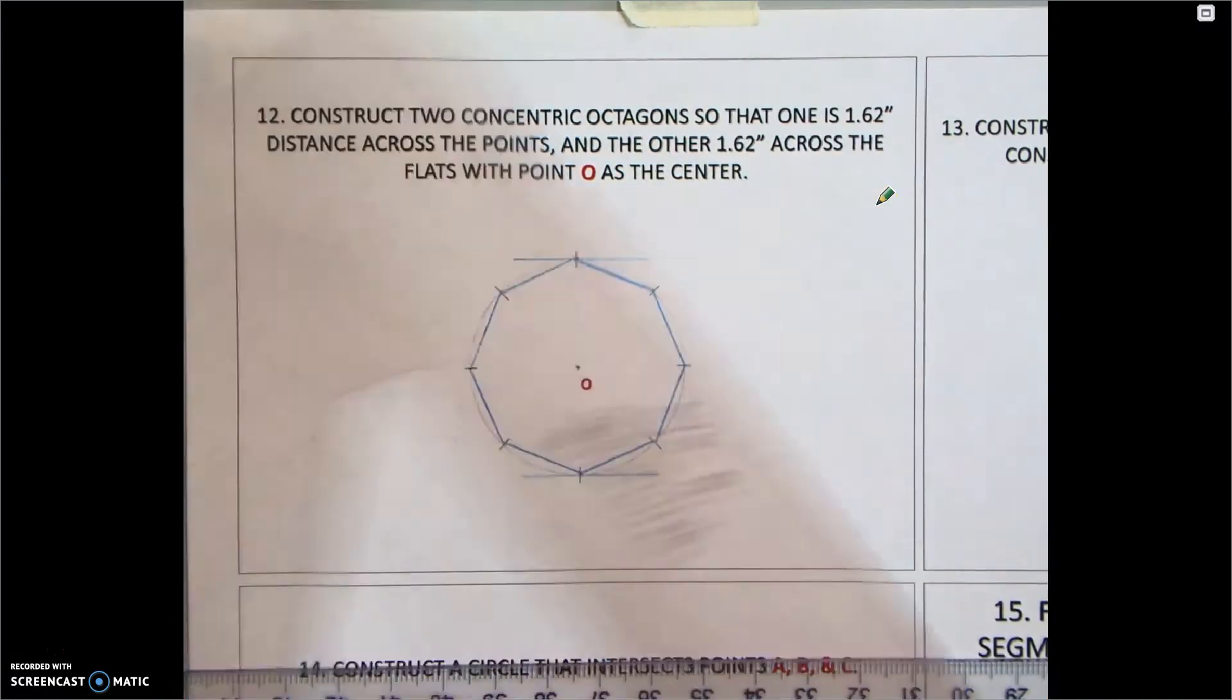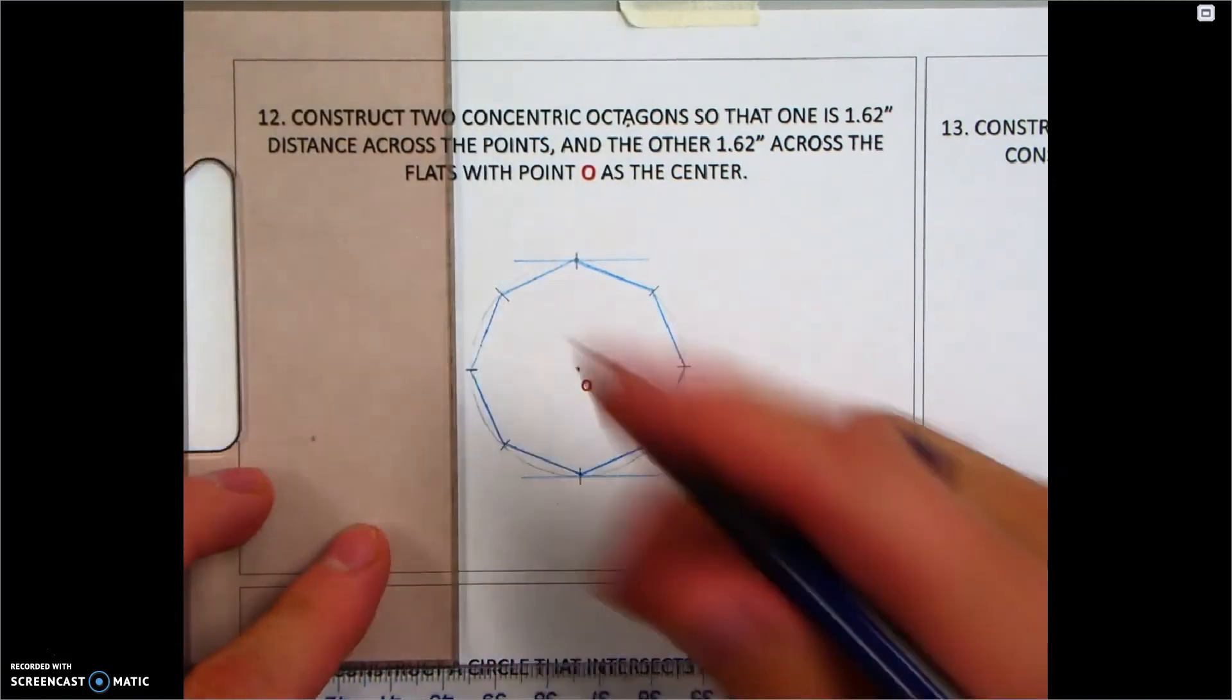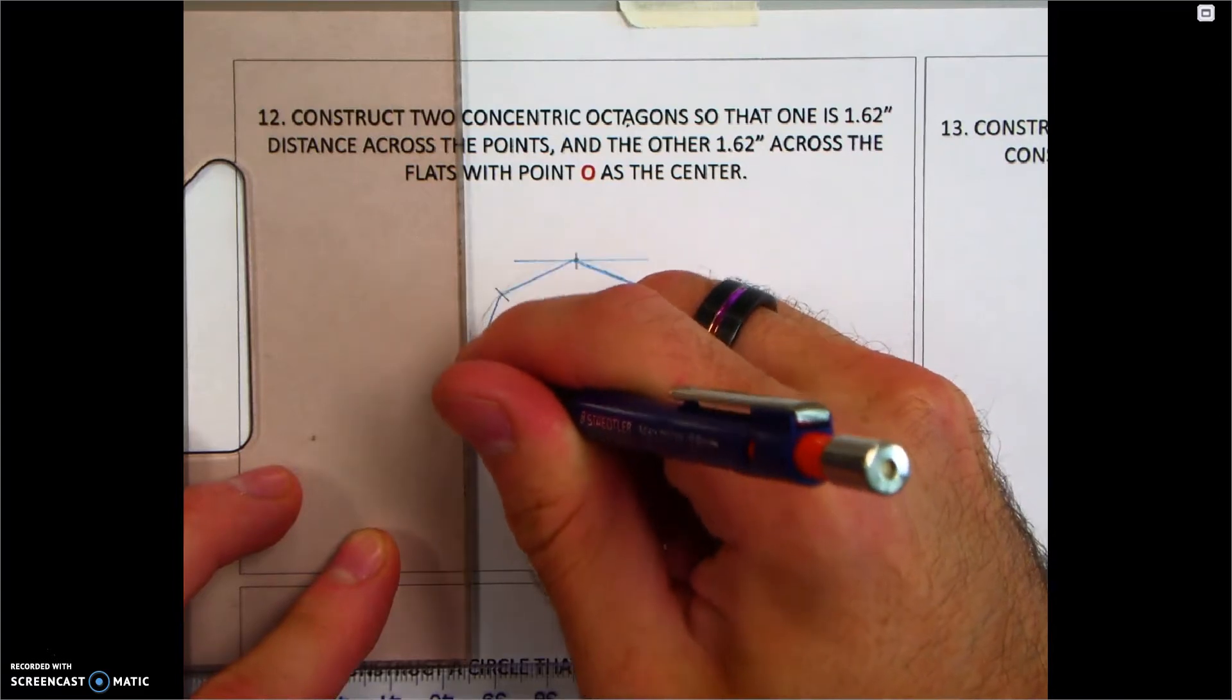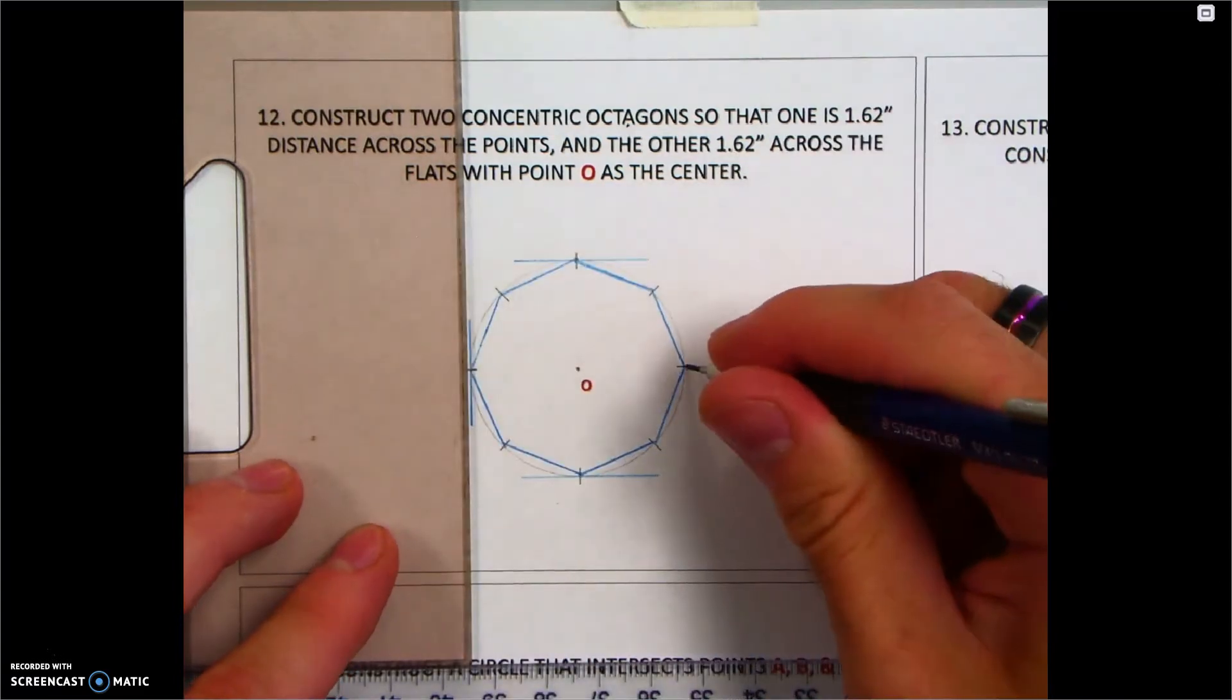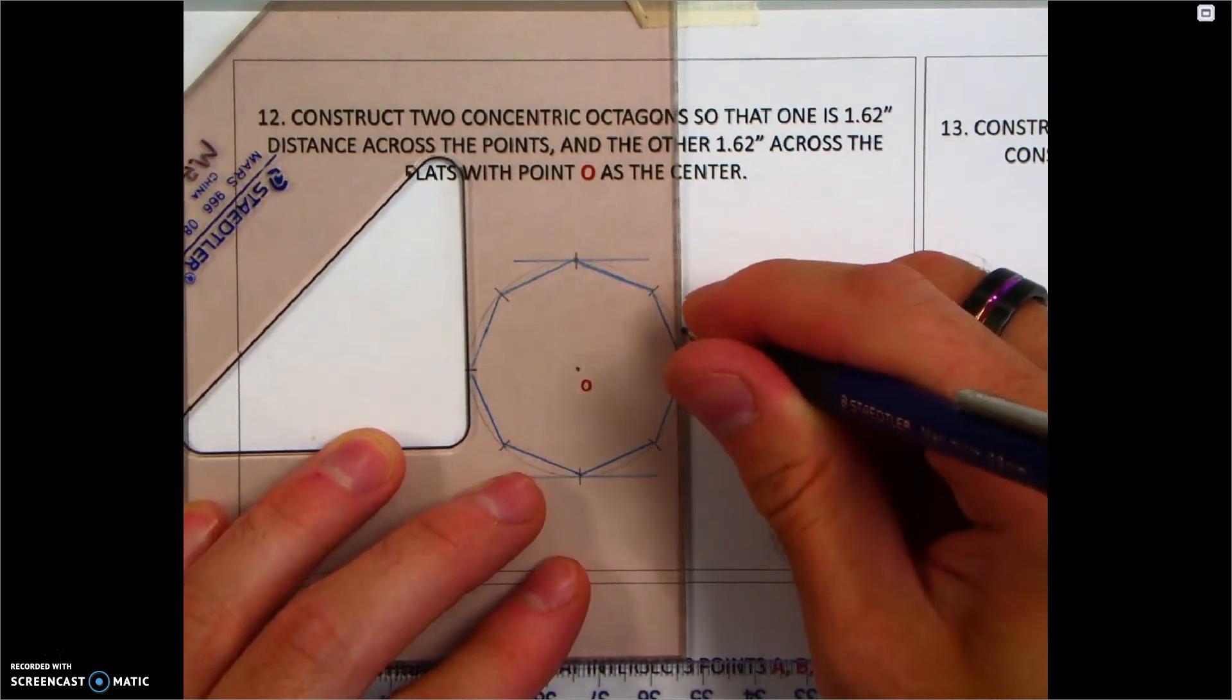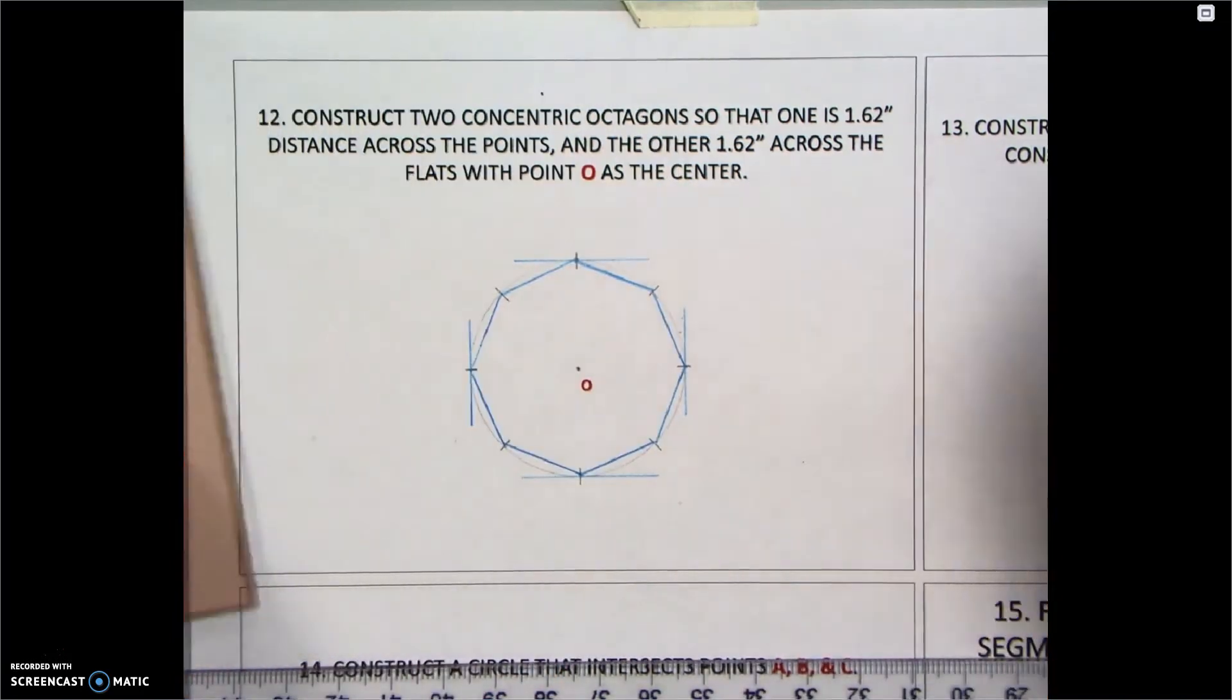Use my triangle, the 90-degree, tangent to the circle, and I'm going to make my line. Same on the opposite side, tangent to the circle, make a line.